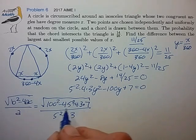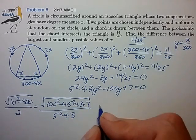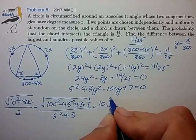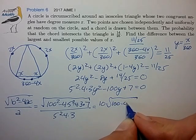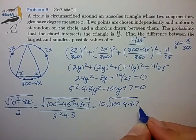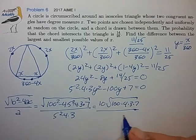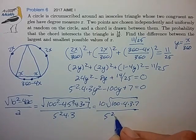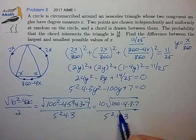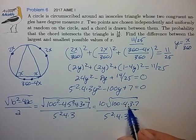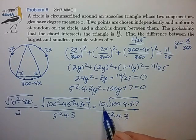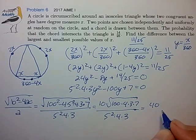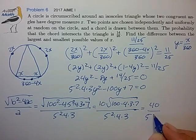We can pull out a factor of 100 outside the square root. Square root of 16, that's 4 times 10, that's 40 over 5 squared.